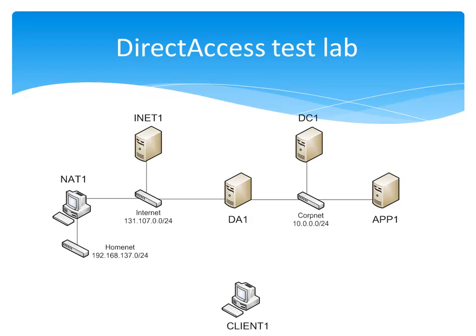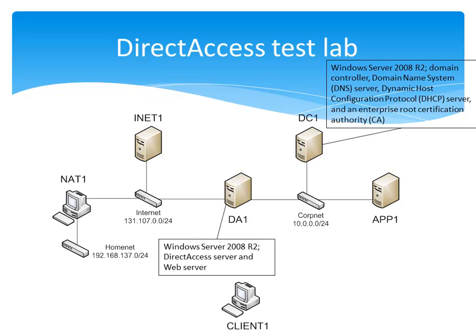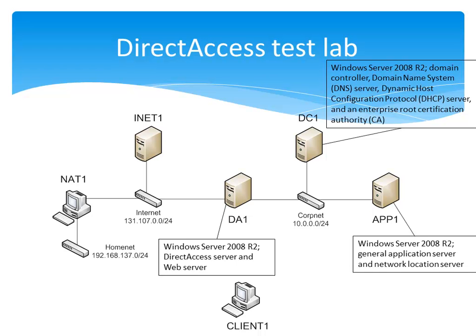Now let's take a look at the individual computers and their roles on this network. DC1 is running Windows Server 2008 R2 and is acting as a domain controller for the corp.contoso.com domain. It is also acting as a DNS server, DHCP server, and an enterprise root certification authority for issuing digital certificates. DA1 is running Windows Server 2008 R2 and is acting as both a Direct Access server and a web server. App1 is running Windows Server 2008 R2 and is acting as a general application server for web access and shared files. It is also acting as a network location server, a very specific type of server that Direct Access clients use to detect whether they are directly connected to their intranets.